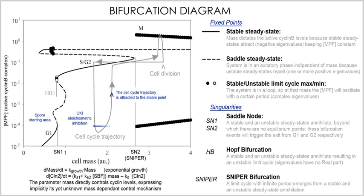Mathematical and theoretical biology is a branch of biology which employs theoretical analysis, mathematical models and abstractions of the living organisms to investigate the principles that govern the structure, development and behavior of the systems, as opposed to experimental biology which deals with the conduction of experiments to prove and validate the scientific theories. The field is sometimes called mathematical biology or biomathematics to stress the mathematical side, or theoretical biology to stress the biological side.